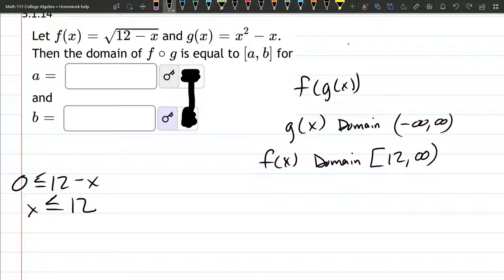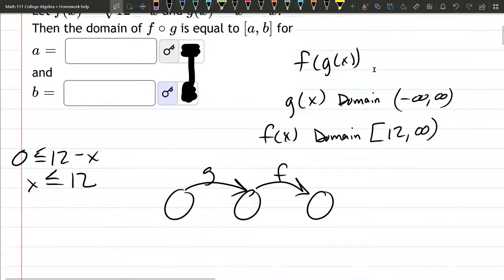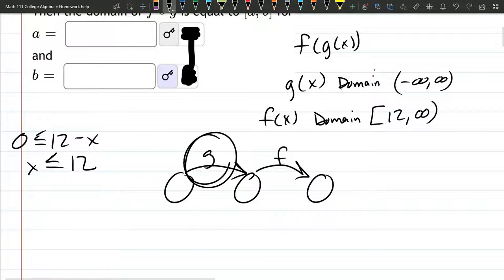Now when you compose functions, you have to think about the g function going first. So the first input is the g function, and then the output of the g function is the input for the f function. And what that means is the outputs of g need to be inside the domain of f. So what that means is f needs to have numbers that are 12 or less.